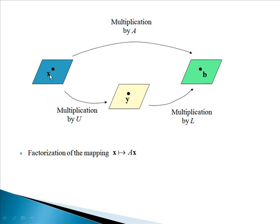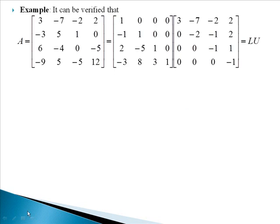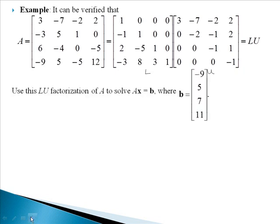This factorization is a factorization of the mapping from X to AX. Let's look at this example. It can be verified that this matrix A here can be factored into this LU factorization given here. Here I've given you L, and here I've given you U. You'll have examples like this on your homework where you're already given the factorization for L and U.